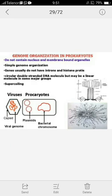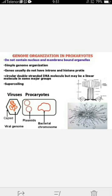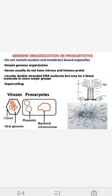In eukaryotes, when DNA combines with histone proteins, they combine together to form chromosomes. But in the case of prokaryotes, no histone protein is present. The bacterial chromosome is a circular double-stranded DNA molecule, but it may also be a linear molecule in some major groups — linear form also exists in some cases.